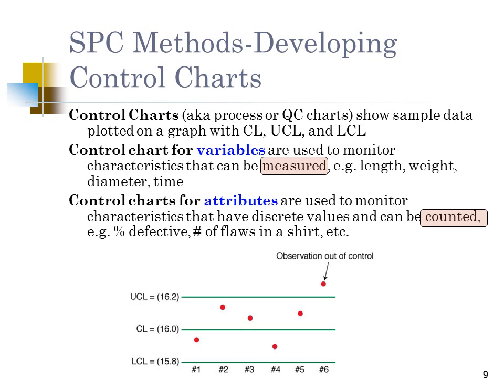In all four types of control charts, we calculate UCL (upper control limit), CL (center line), and LCL (lower control limit). We plot all observations on the chart. If all observations fall between the upper and lower control limits, the process is in statistical control. If there is an outlier, the process is not in statistical control.